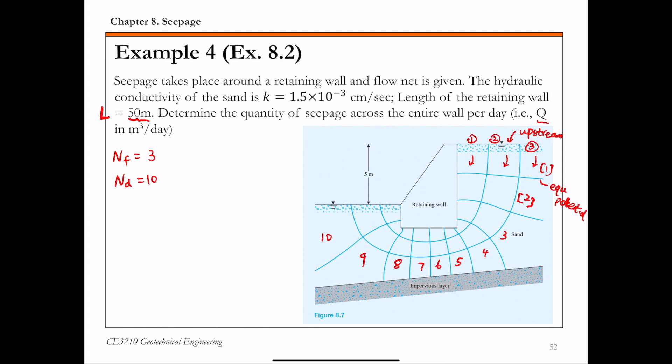The total head loss from upstream to downstream is simply the difference between upstream and downstream water tables. So H is 5 meters for this example.